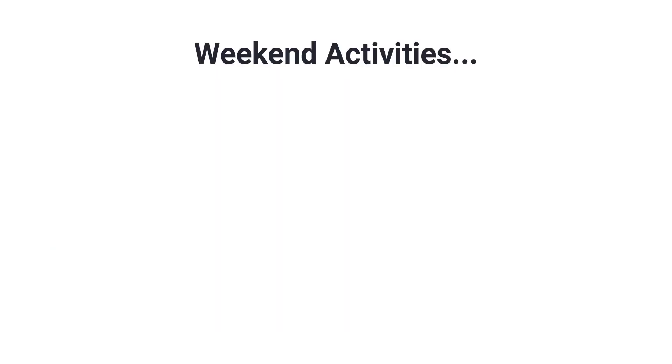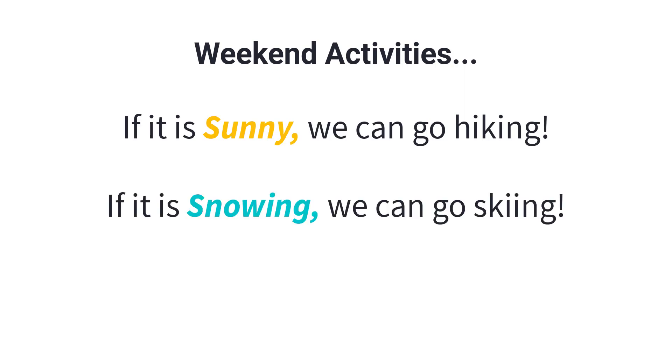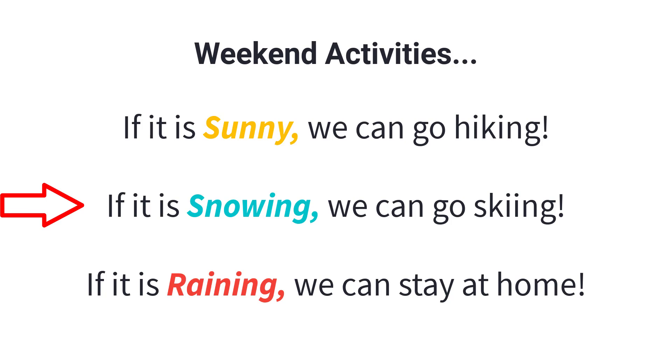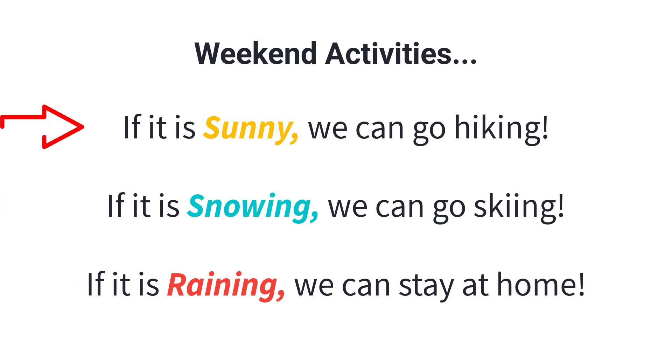For example, when planning our weekend, our first step might be to find out what the weather is like. Based on that, we could plan our weekend activity. If it's sunny, we can go hiking. If it's snowing, we can go skiing. If it's raining, we can stay at home and watch a movie. We can't do all three at the same time — only one — and each option is based on its condition: if it's sunny, if it's snowing, if it's raining.